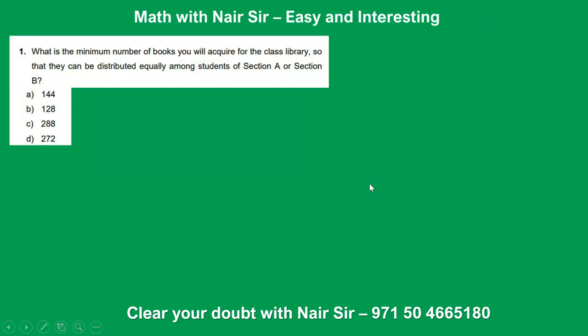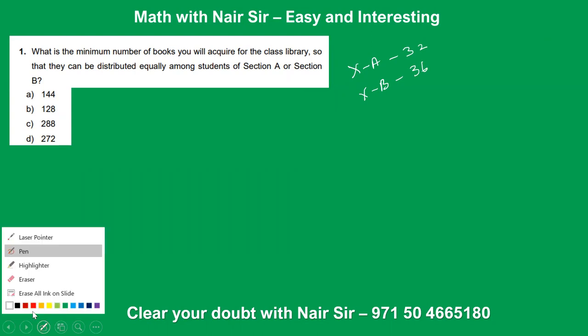Question 1: What is the minimum number of books you will acquire for the class library, so that they can be distributed equally among students of section A and B — so that everyone gets the same number of books?